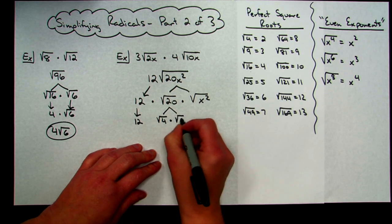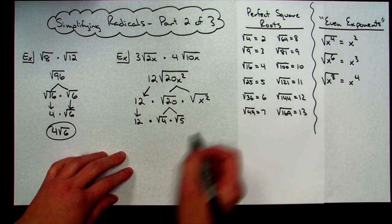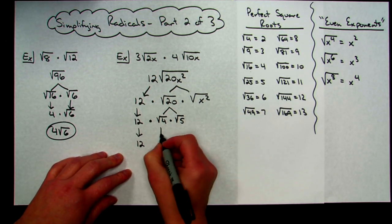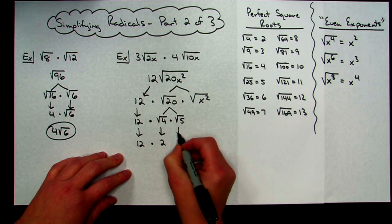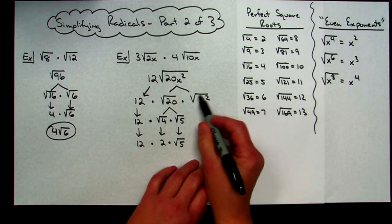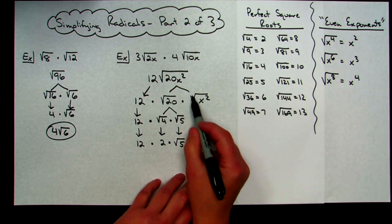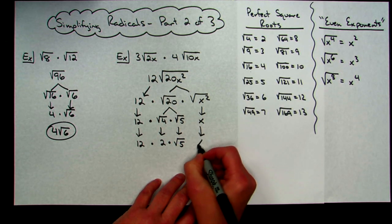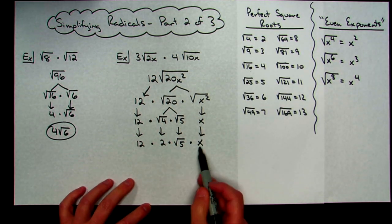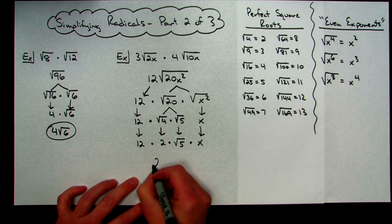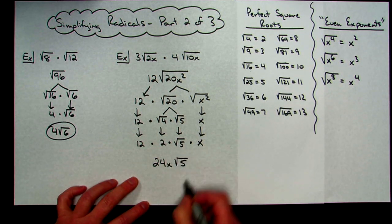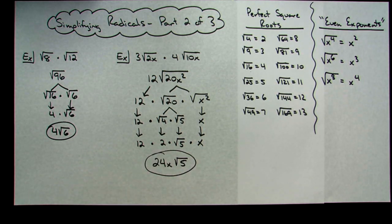The 12 comes straight down. Square root of 4 is 2, and square root of 5 is simplified. For square root of x²: it's an even exponent, so I take half — that gives just x. Multiplying everything outside the radicals: 12 times 2 times x gives 24x. There's only square root of 5 remaining under the radical. Final answer: 24x square root of 5.